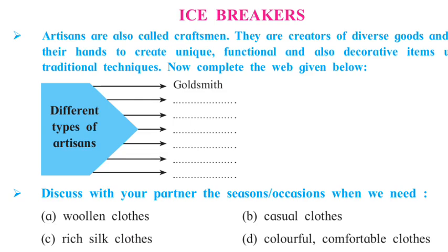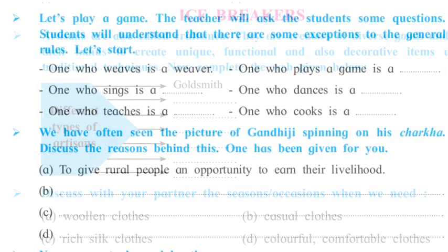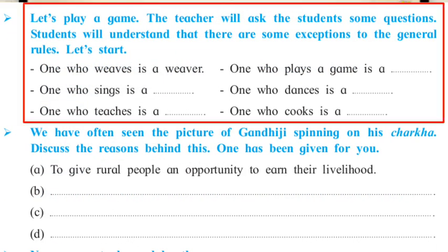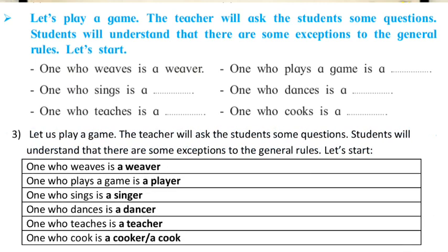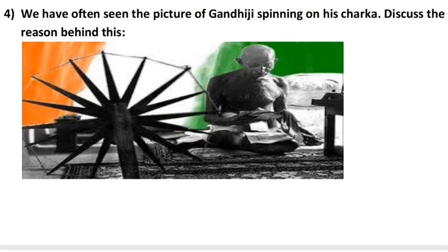For Activity 3, write one word for a group of words. Note some exceptional cases — for example, one who teaches is a 'teacher,' but one who cooks is not a 'cooker' but a 'cook.' Solve the activity in your notebook. For Activity 4, discuss the reason behind Gandhiji spinning on his charkha — some reasons are given, and students should find the others.